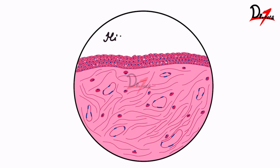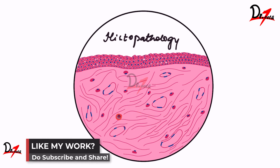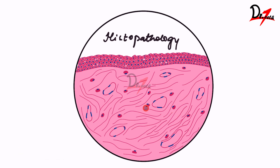Now let us talk about the histopathological features. Here we have the connective tissue, and on top of it we have the epithelium. In the connective tissue, you will find dense bundles of collagen — these lines going all around the connective tissue are the collagen fibers, interlacing with each other. We also have fibroblasts, which are the cells that secrete the collagen fibers. Inactive fibroblasts can also be appreciated.